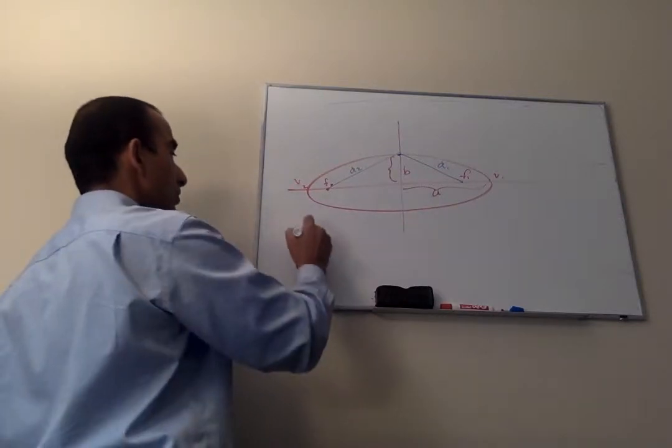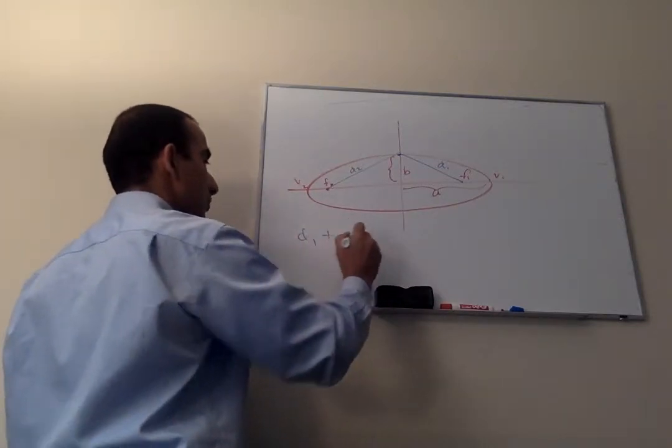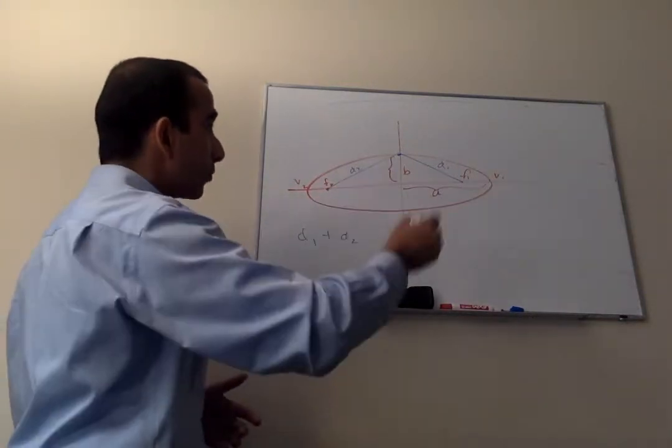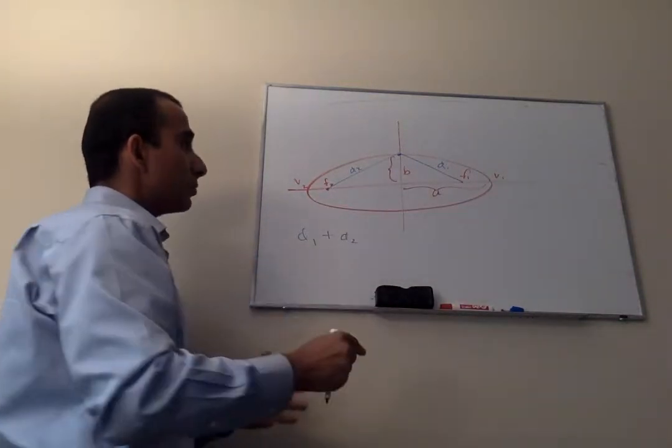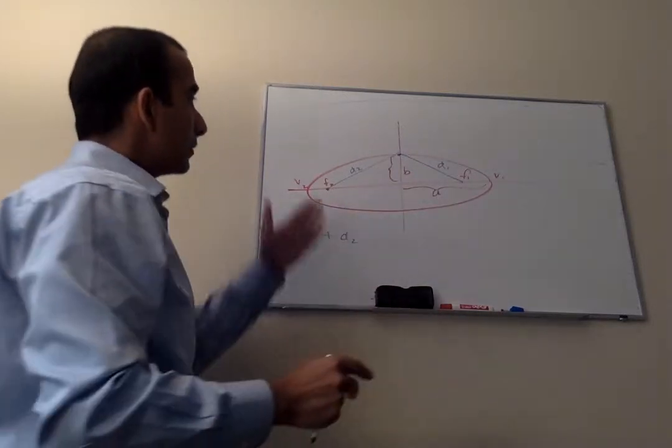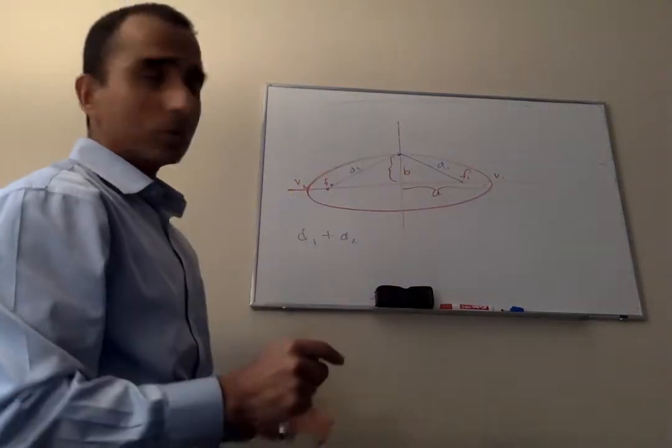By definition, D1 plus D2 is constant. That's the definition of an ellipse. An ellipse is the collection of all points where D1 plus D2 is the same, where D1 is the distance from foci 1 to the point, and D2 is the distance from foci 2 to that same point.